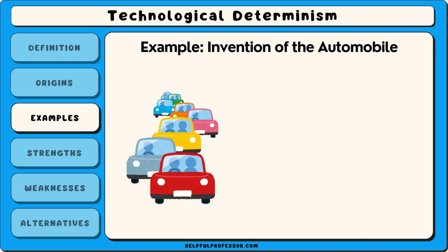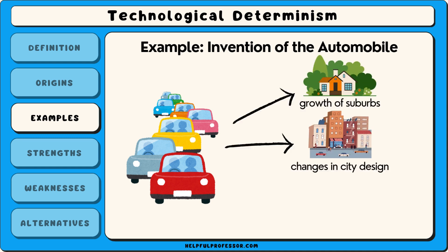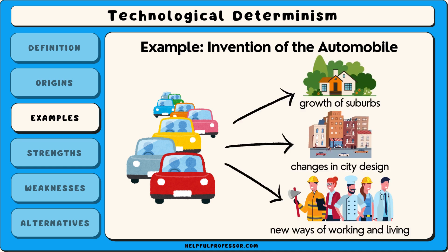Another example is the invention of the automobile. Cars revolutionized transportation, leading to the growth of suburbs, changes in city design and new ways of working and living. Both of these examples show how technology can alter the structure of society.